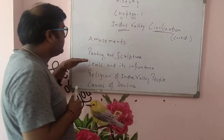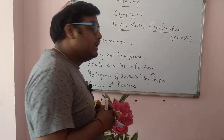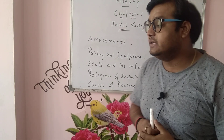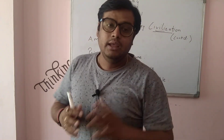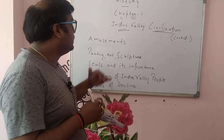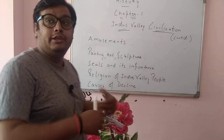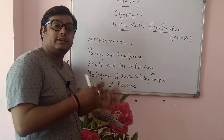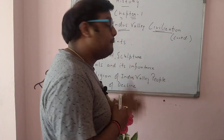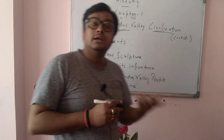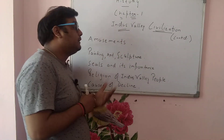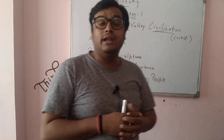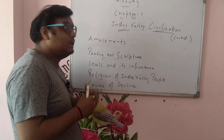Next we'll talk about painting, art, and sculpture. Painting, art, and sculpture at that time were at a great height. They also knew the use of metallurgy and the art of sculpture. A seated yogi statue is a perfect example of sculpture. A Nataraja-position idol was also found — a position of dancing. A bronze statue of a dancing girl was also found as an example of sculpture.